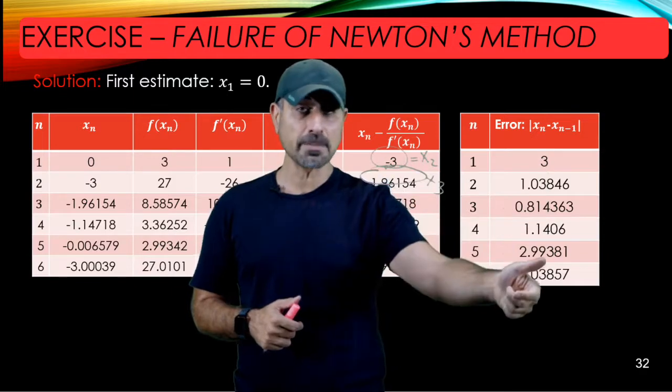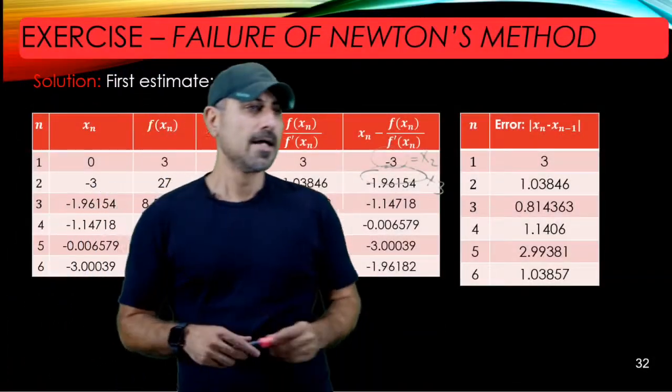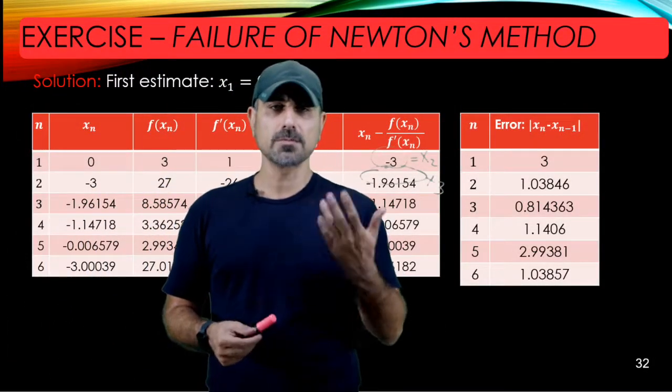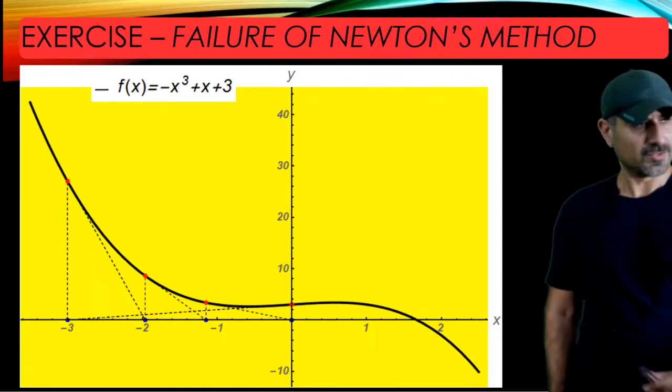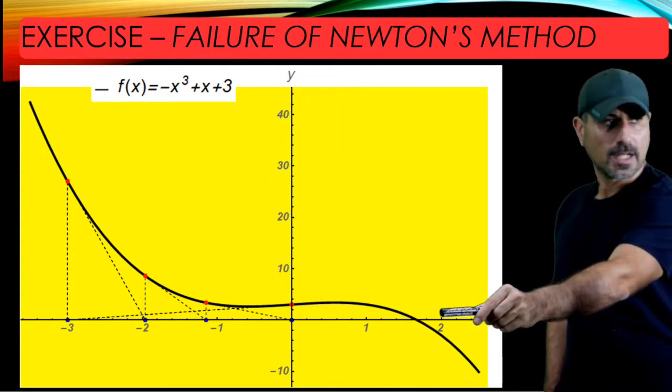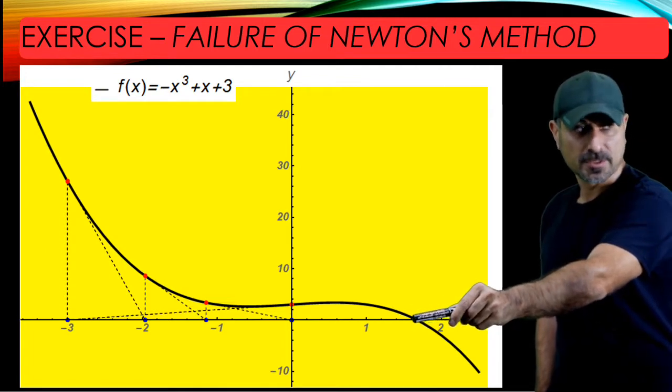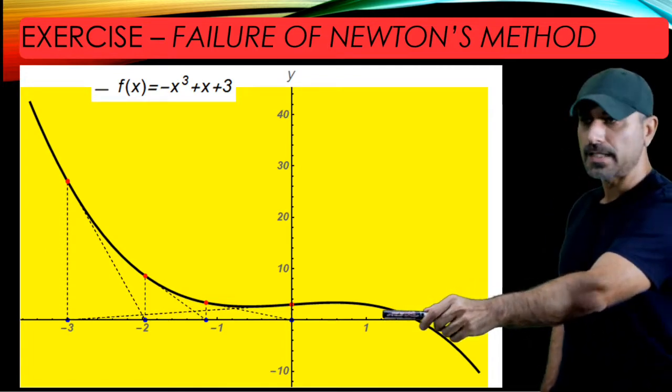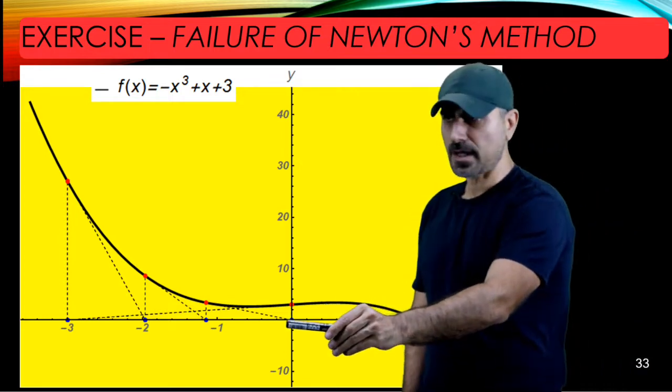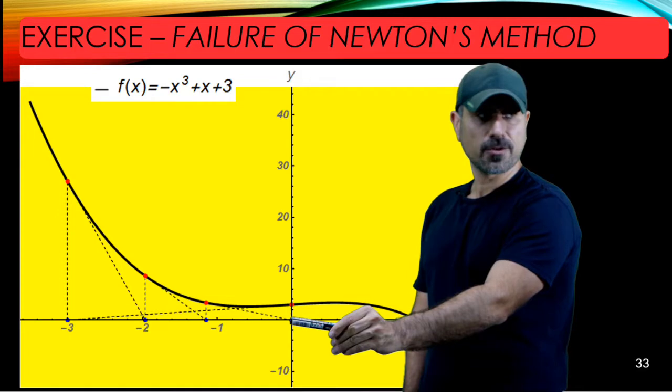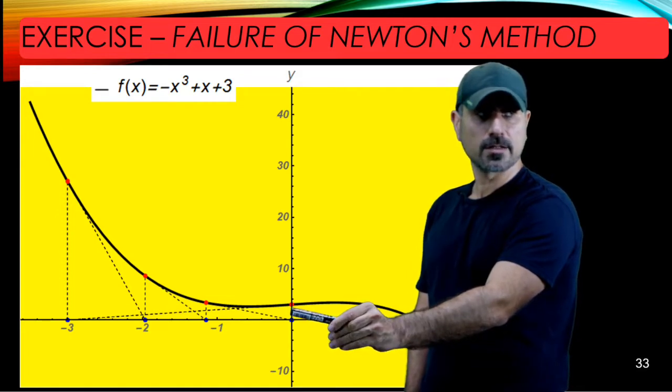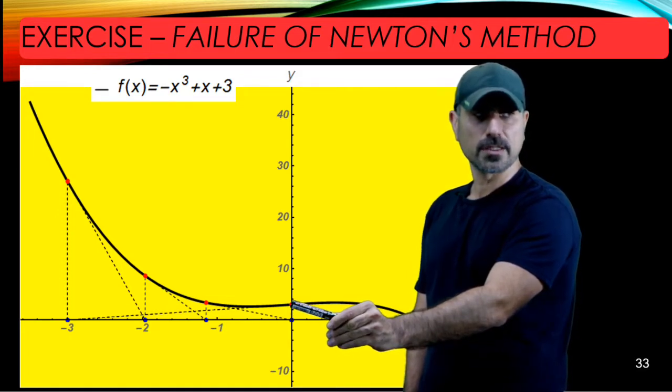Let's see what's going on in terms of the graph. The actual x-intercept or zero of the function is here, but we started with x₁ = 0.